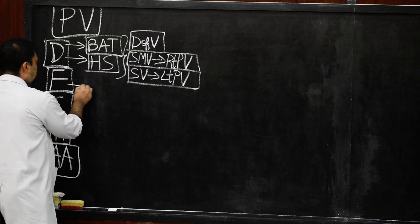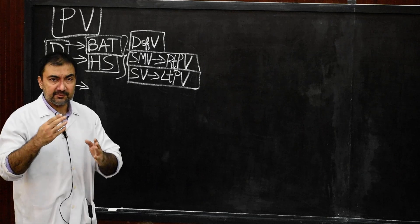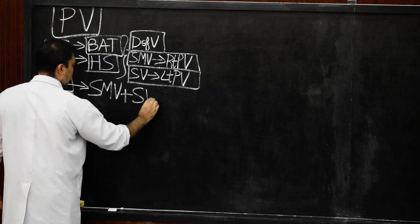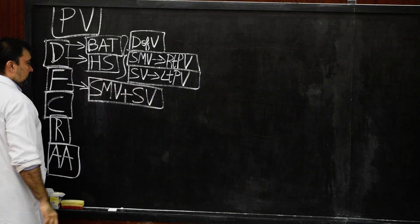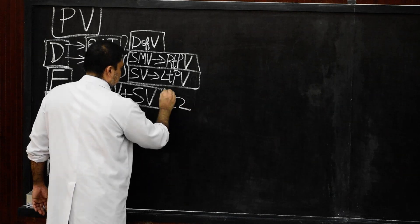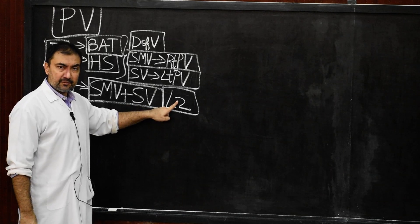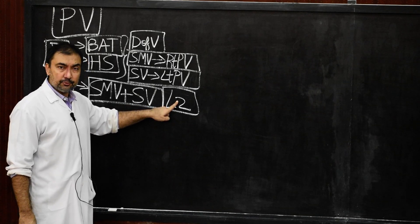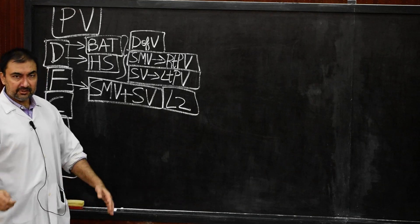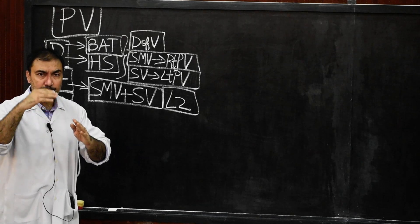The formation of portal vein: it is formed by the joining of the superior mesenteric vein and the splenic vein. This formation takes place exactly at vertebral level L2, behind the neck of the pancreas — an important MCQ point.